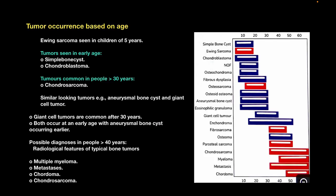Let's look at the first point: age. Ewing sarcoma is seen in children aged 5 to 10 years. On the graph, from about 5 to 20 years, simple bone cyst and Ewing sarcoma can be seen, while chondroblastoma is seen up to 20 years. Non-ossifying fibroma and osteochondroma occur within 5 to 20 years, and fibrous dysplasia within 5 to 25–30 years. Osteosarcoma, osteoid osteoma, aneurysmal bone cyst, and eosinophilic granuloma are seen between 5 to 30 years, while giant cell tumors are most commonly seen from 15 to 35 years.